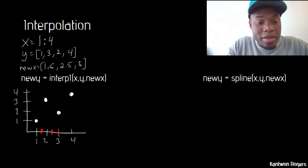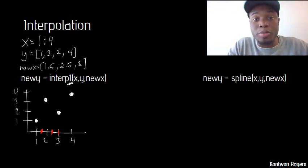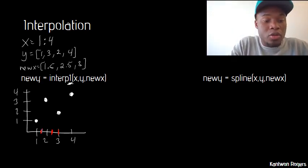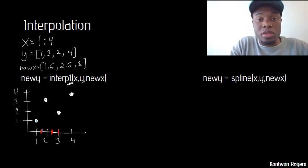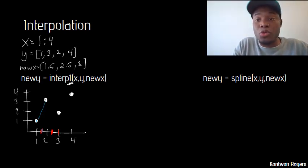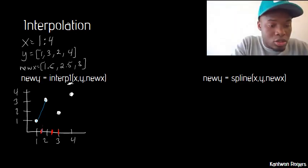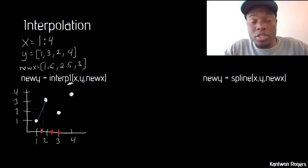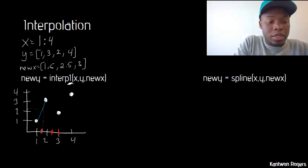The way interp1 works — by the way, that's a 1, not an L, that's a common mistake people make — is by linear interpolation. So when it's guessing for 1.5, what it's going to do is look at the two values around 1.5, connect those with a straight line, and then in order to guess the new y value, it goes up from the x to the intersection of that line, then over to the y axis. That's how it guesses mathematically what that new y point would be.